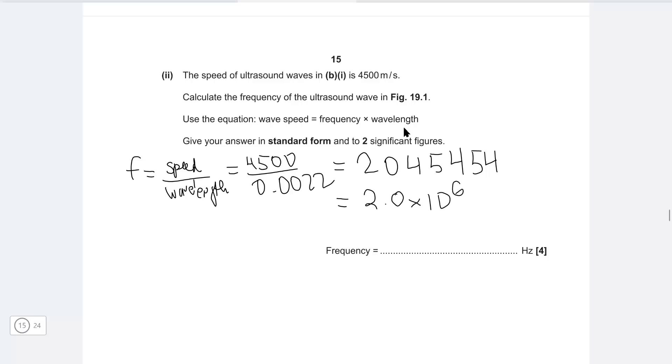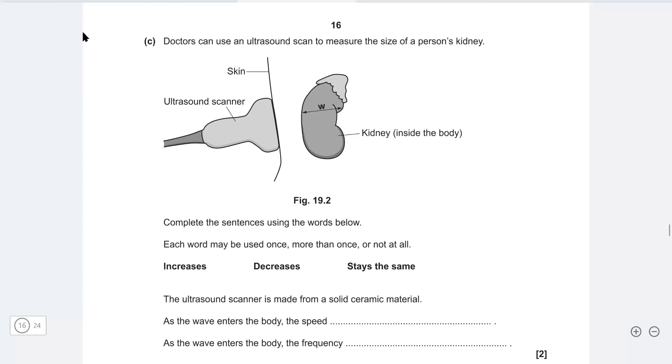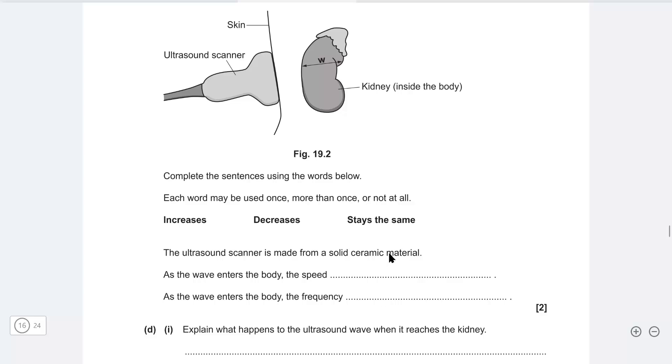So that's the answer we're going to write in this box 2.0 times 10 to 6 hertz. Okay next one doctors can use ultrasound to measure the size of a person's kidney and then we've got an ultrasound scanner we have the skin and then we have this kidney in here so complete the sentences using the words below so the ultrasound scanner is made from a solid surrounding material as the wave enters the body the speed will actually decrease because there is some refraction happening as with any medium. Now with all of these changes the frequency actually remains totally constant so we're going to say here that it stays the same.